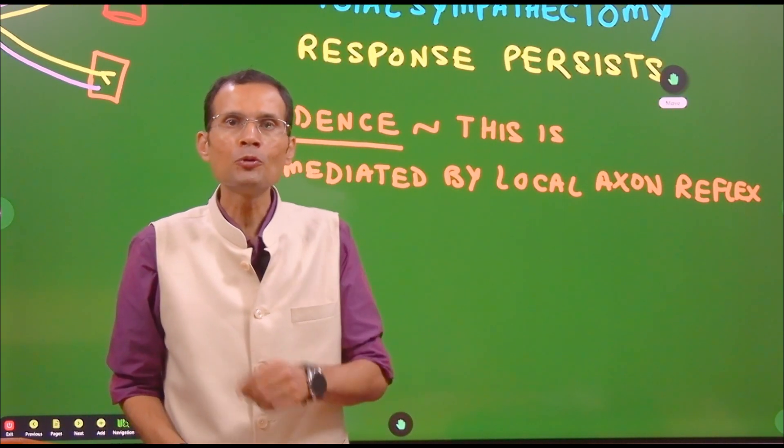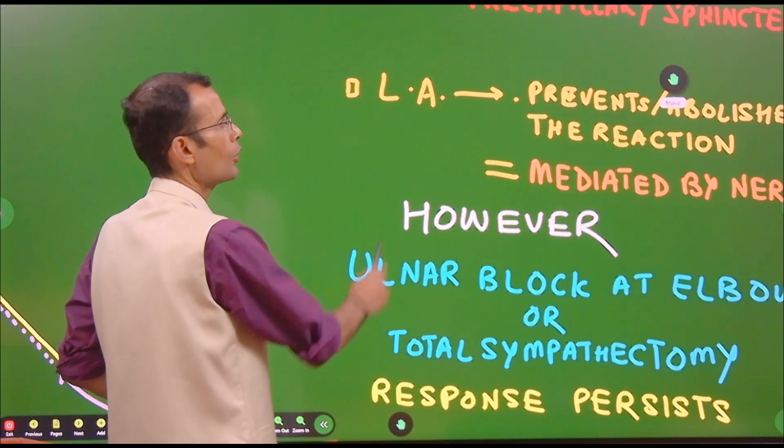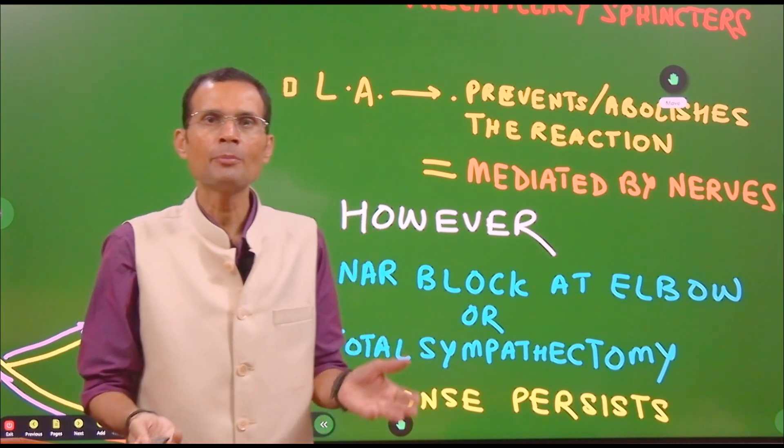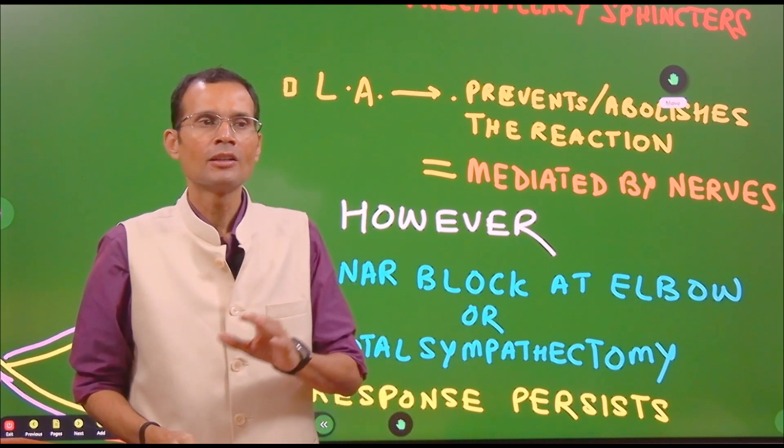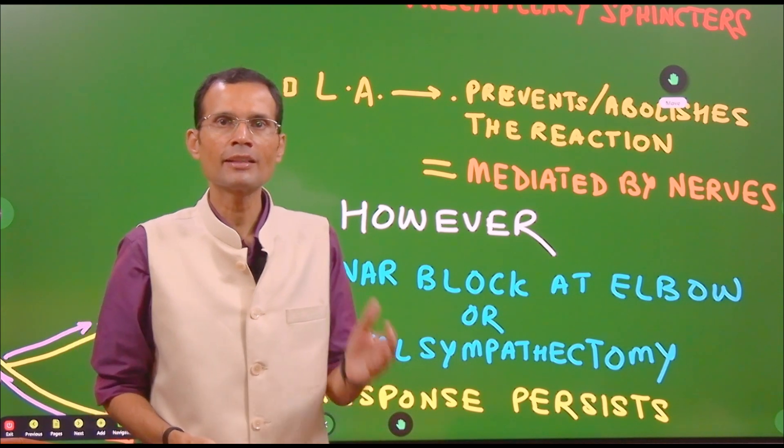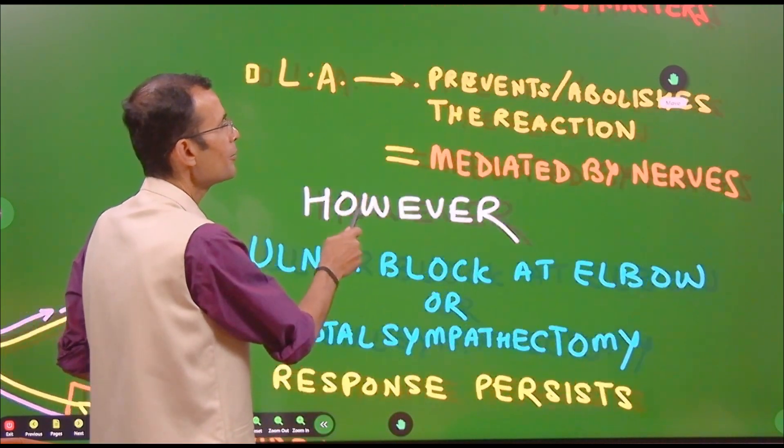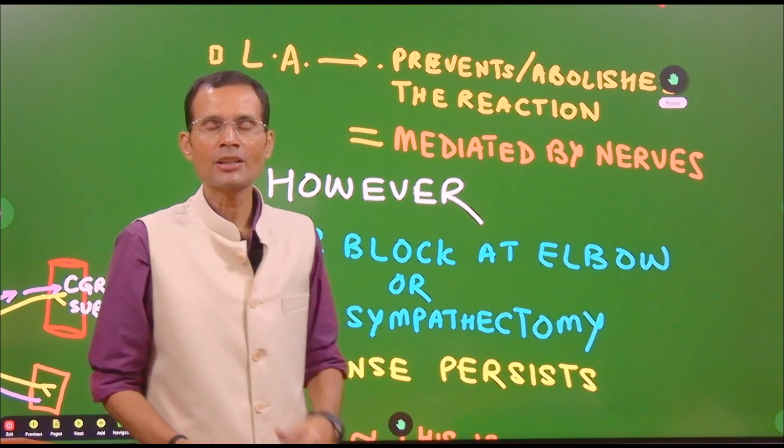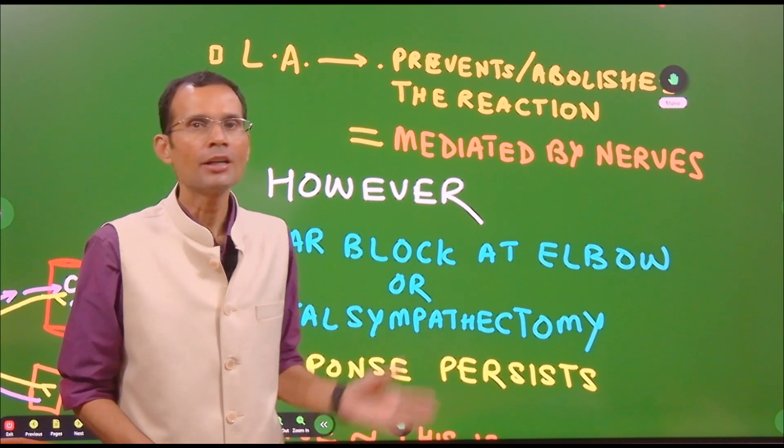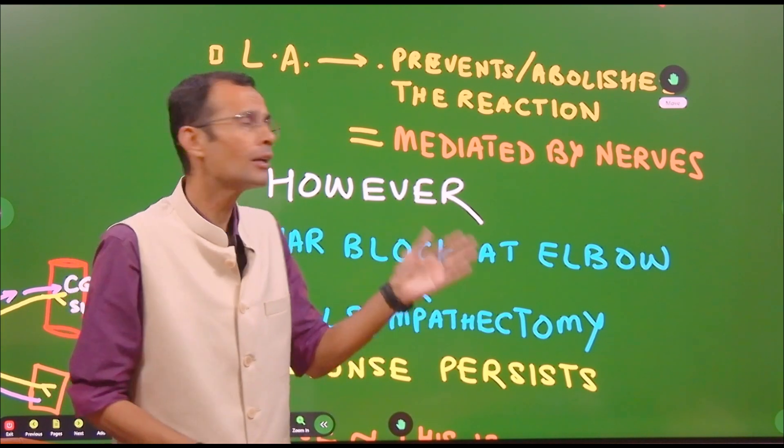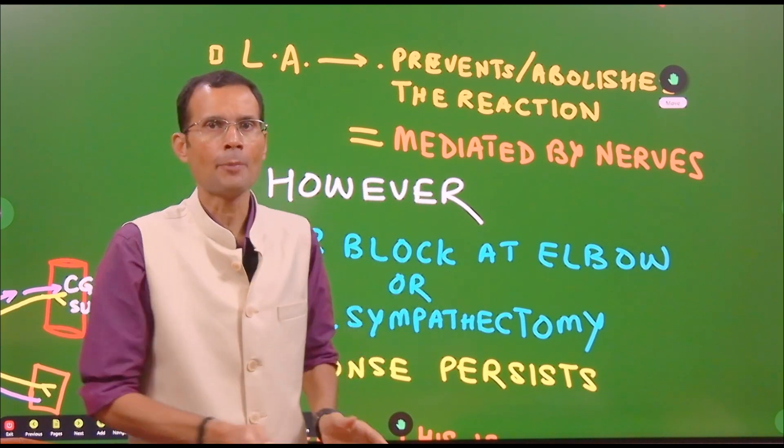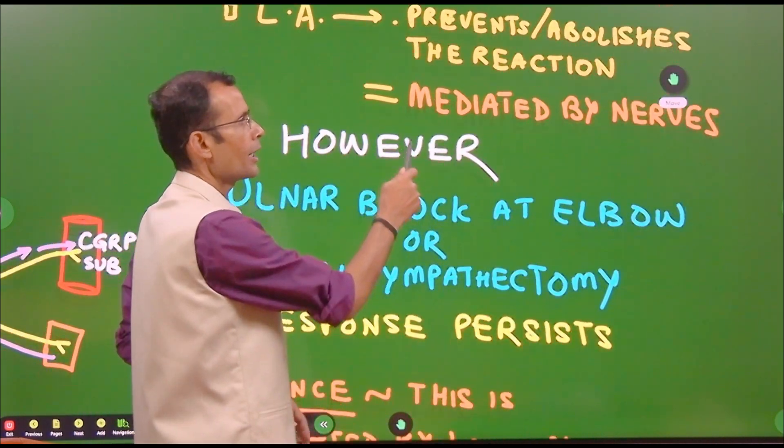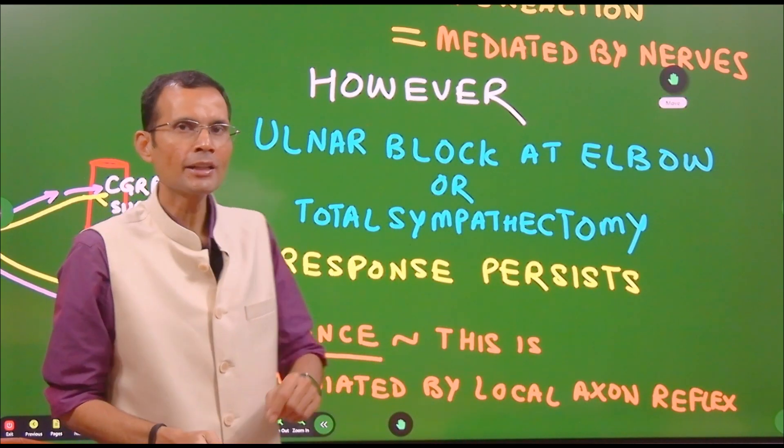How we prove it? What is the evidence that nerves were involved? We apply local anesthetic again, same way. Local anesthetic was applied to see whether the reaction gets abolished. This time, application or injection of local anesthetic and the reaction is prevented. It does not happen. Flare does not happen. The red reaction will happen, but flare does not happen. It is prevented. It is abolished. That means definitely it is mediated by the nerves.